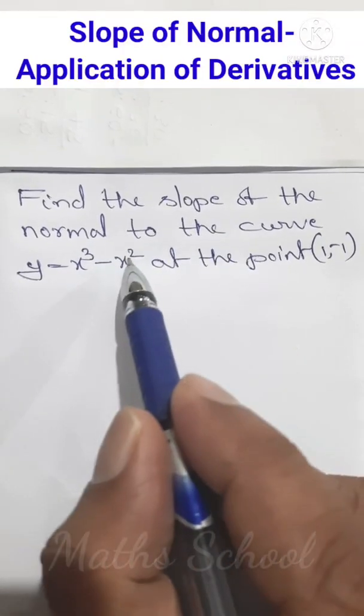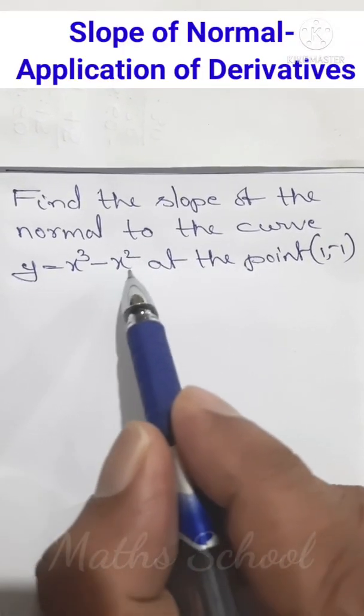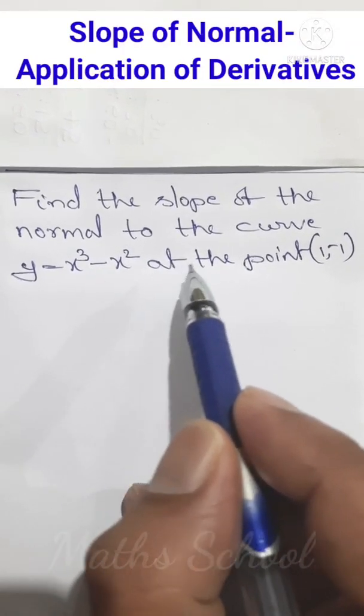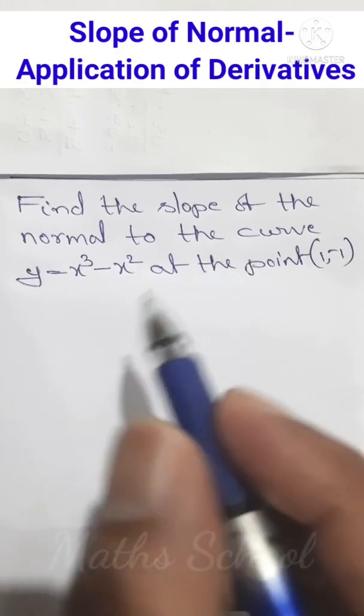Find the slope of the normal to the curve y = x³ - x² at the point (1, -1).